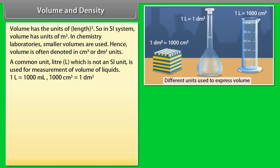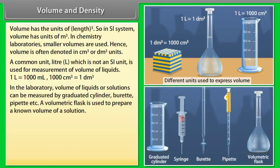One liter is equal to 1,000 milliliters. 1,000 centimeter cube is equal to 1 decimeter cube. In the laboratory, volume of liquids or solutions can be measured by graduated cylinder, burette, pipette, etc. A volumetric flask is used to prepare a known volume of a solution.